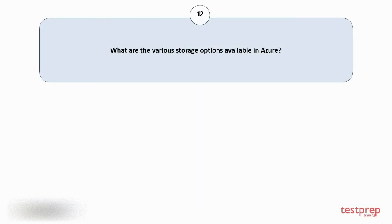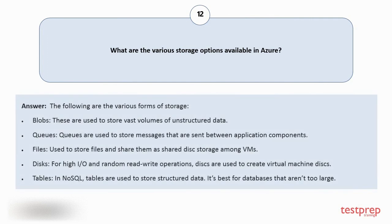Question number 12: What are the various storage options available in Azure? The following are the various forms of storage. 1. Blobs: These are used to store vast volumes of unstructured data. 2. Queues: Queues are used to store messages that are sent between application components. 3. Files: Used to store files and share them as shared disk storage among VMs. 4. Disks: For high-IO and random read-write operations, disks are used to create virtual machine disks. 5. Tables: In NoSQL, tables are used to store structured data. It's best for databases that aren't too large.